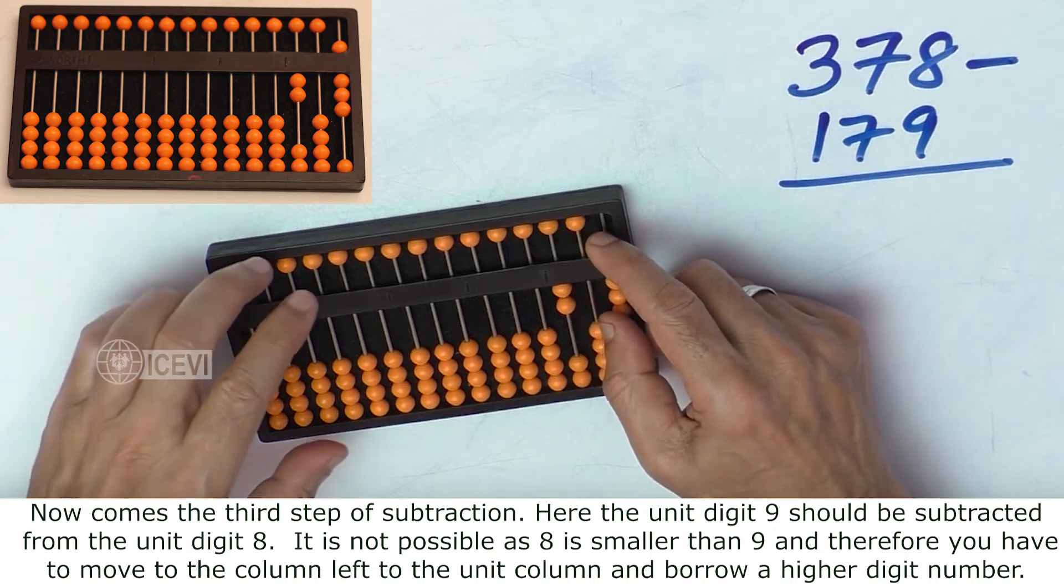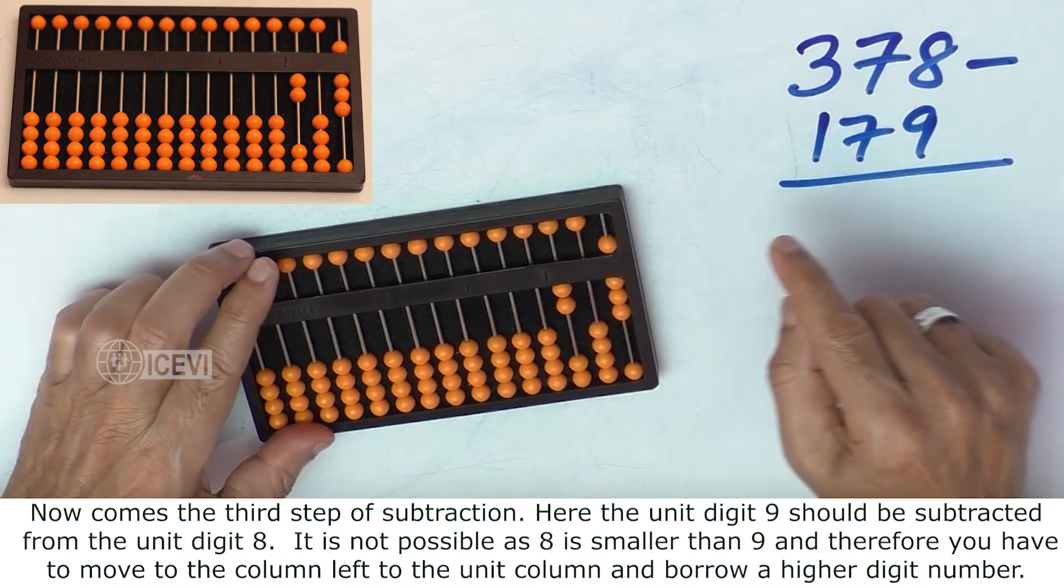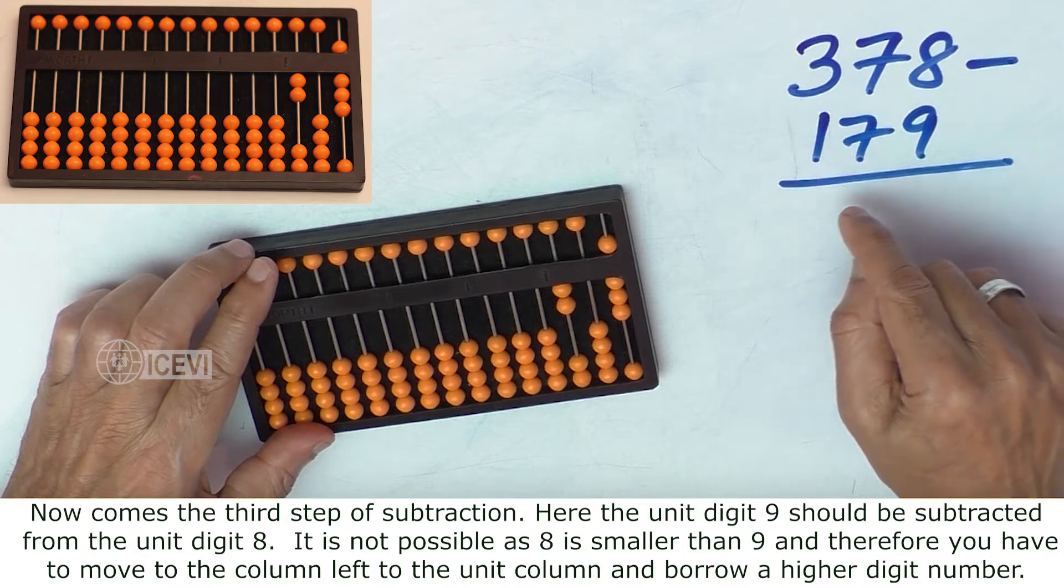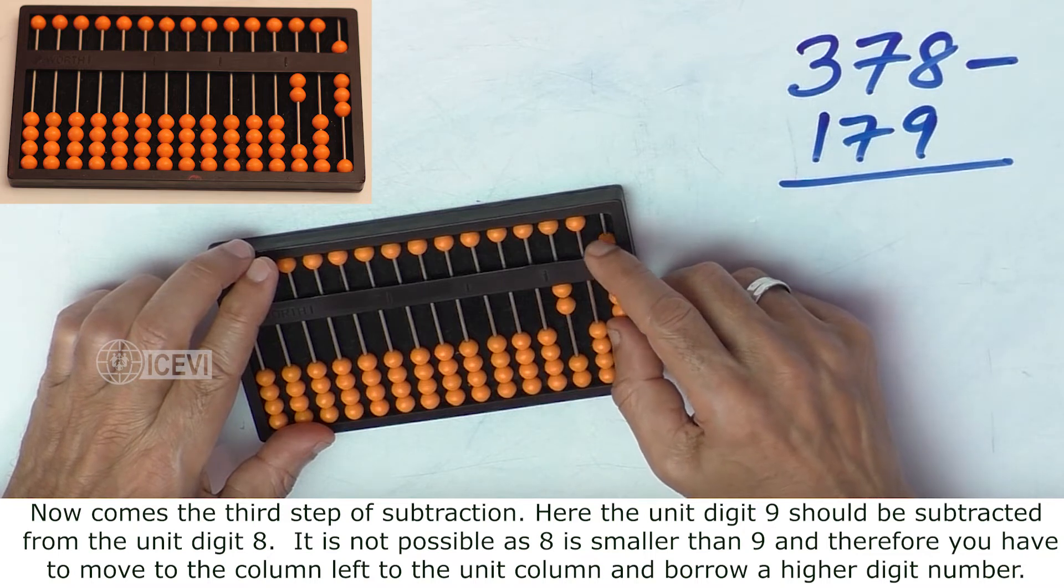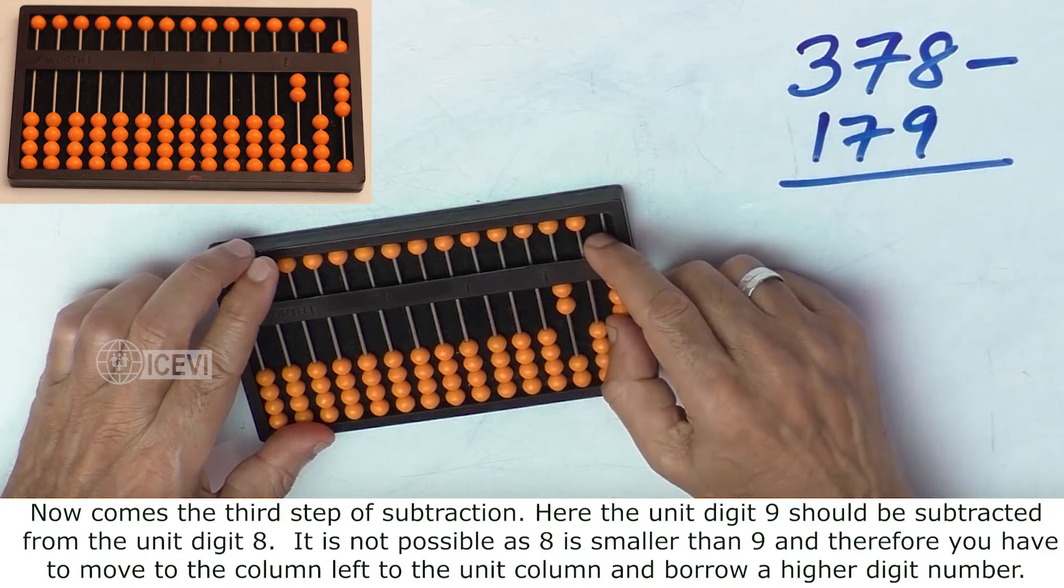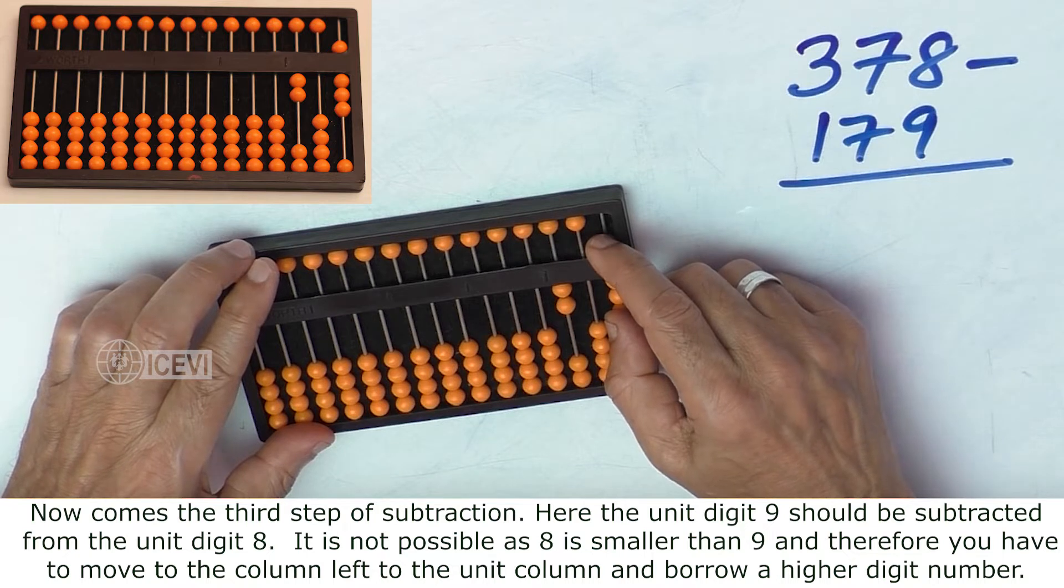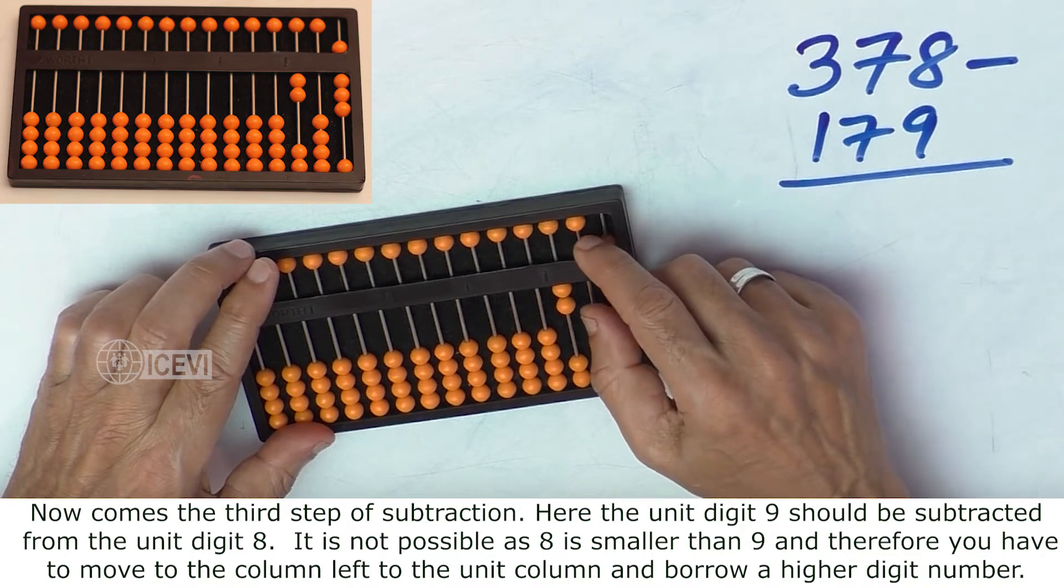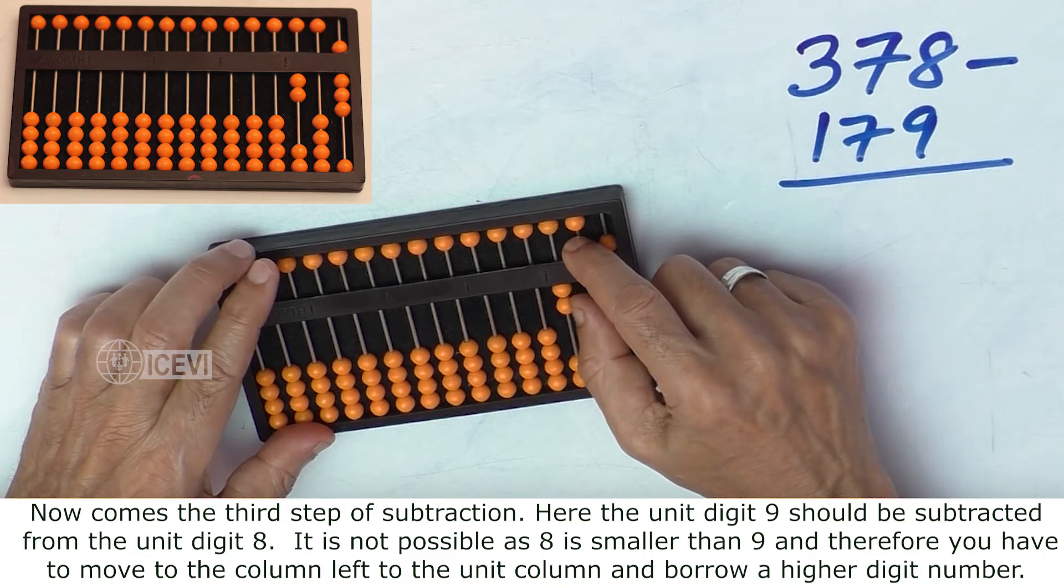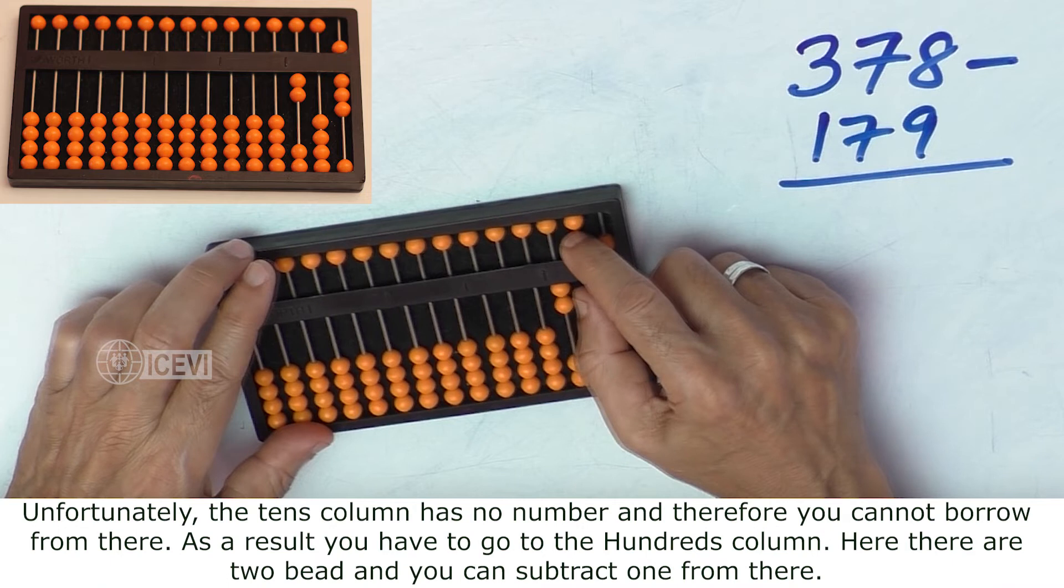Now comes the third step of subtraction. Here the unit digit 9 of the number 179 should be subtracted from the unit digit 8 of 378. It is not possible as 8 is smaller than 9, and therefore you have to move to the column left to the unit column and borrow a higher digit number.